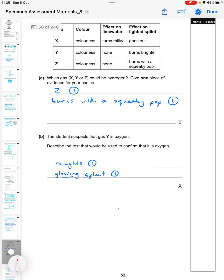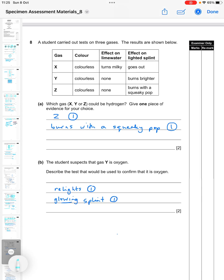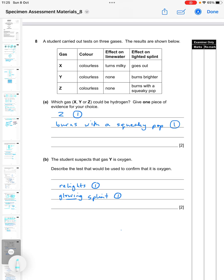Question eight: a student carried out tests on three gases. The results are shown below. Which one could be hydrogen? Give one piece of evidence for your answer. Two marks here: one for which gas and one for your evidence. Z is the correct answer and the reason is because it burns with a squeaky pop. But you can't just say squeaky pop, you have to say it burns with a squeaky pop to get your two marks.